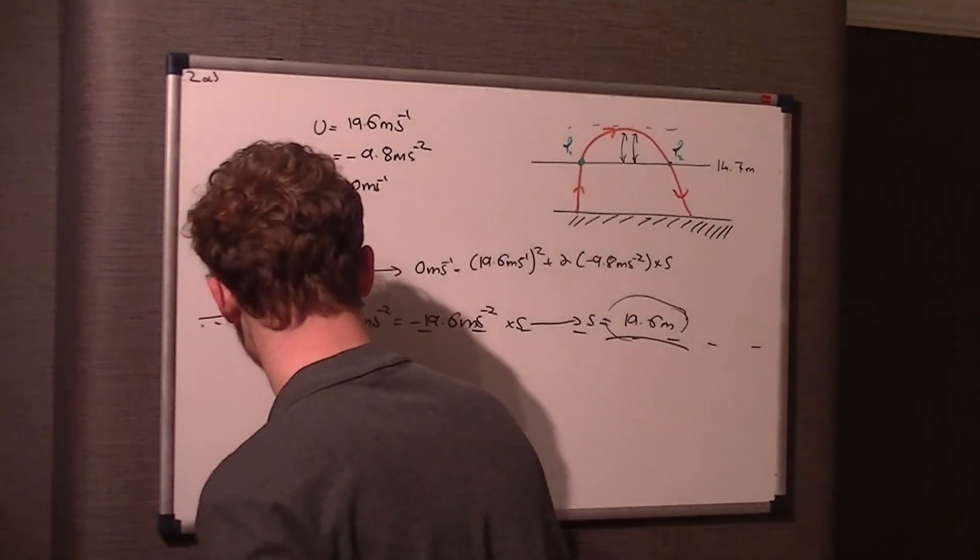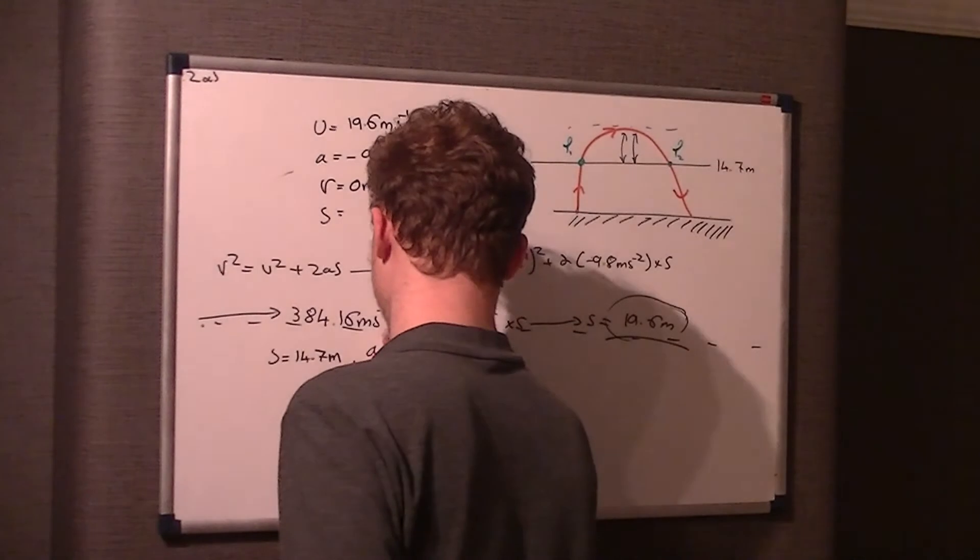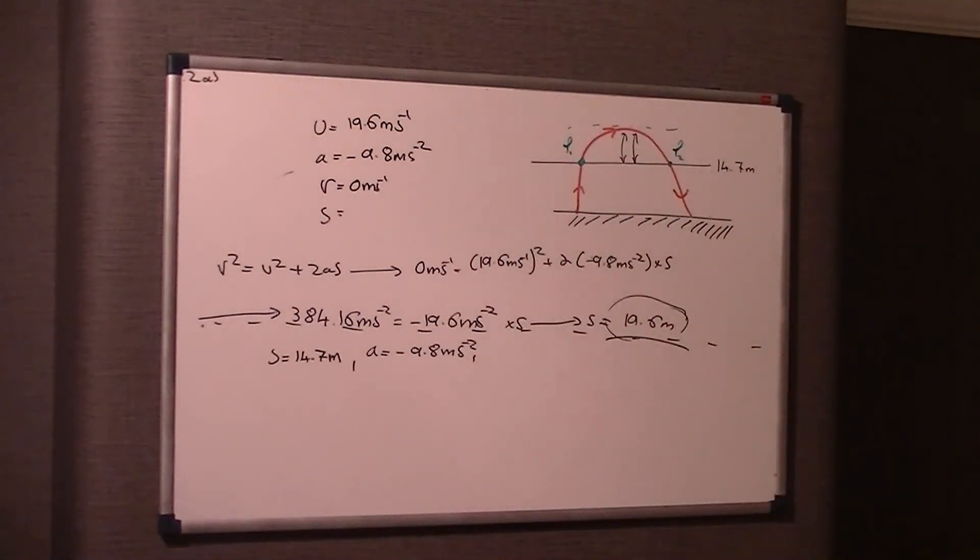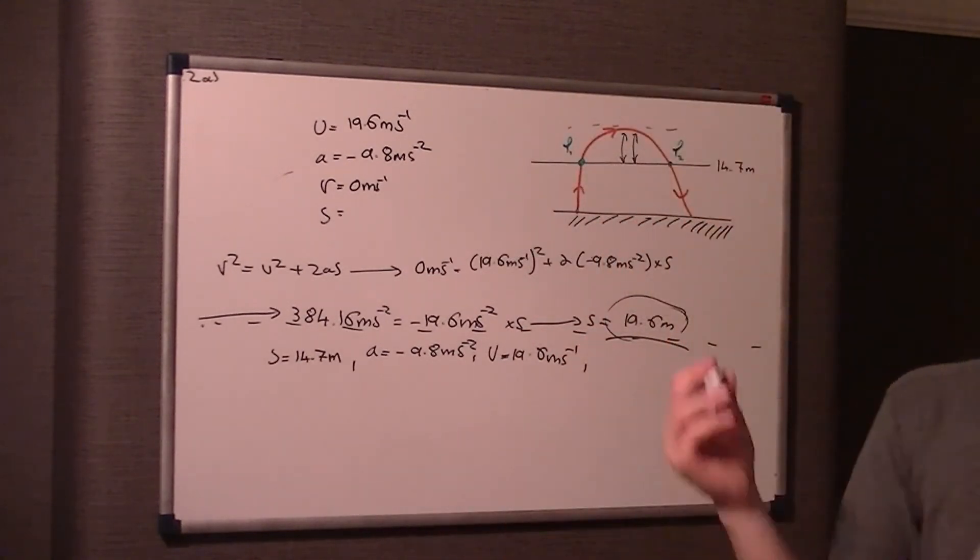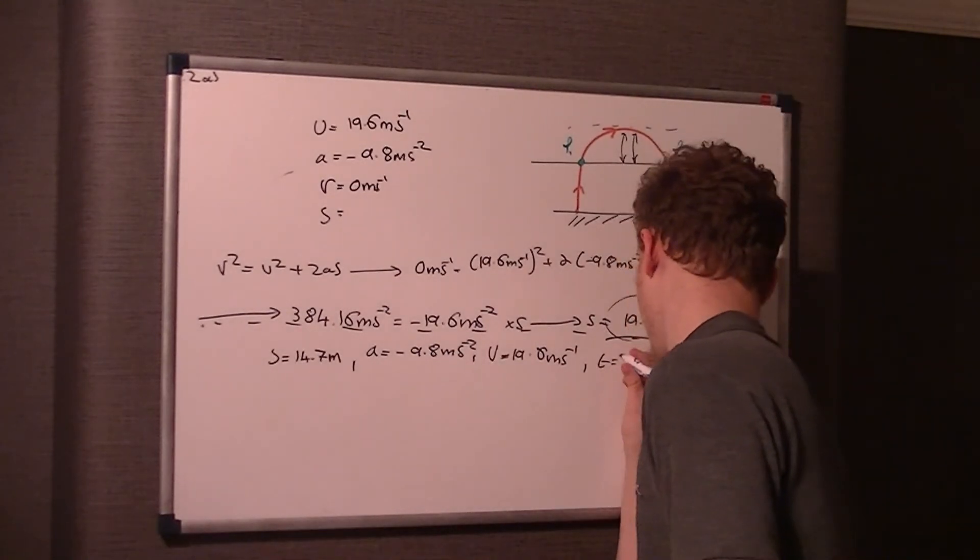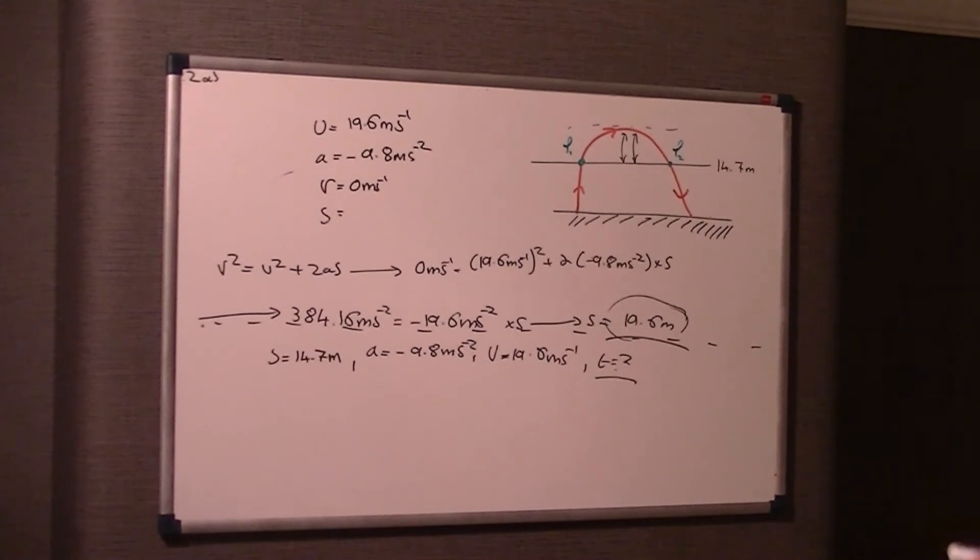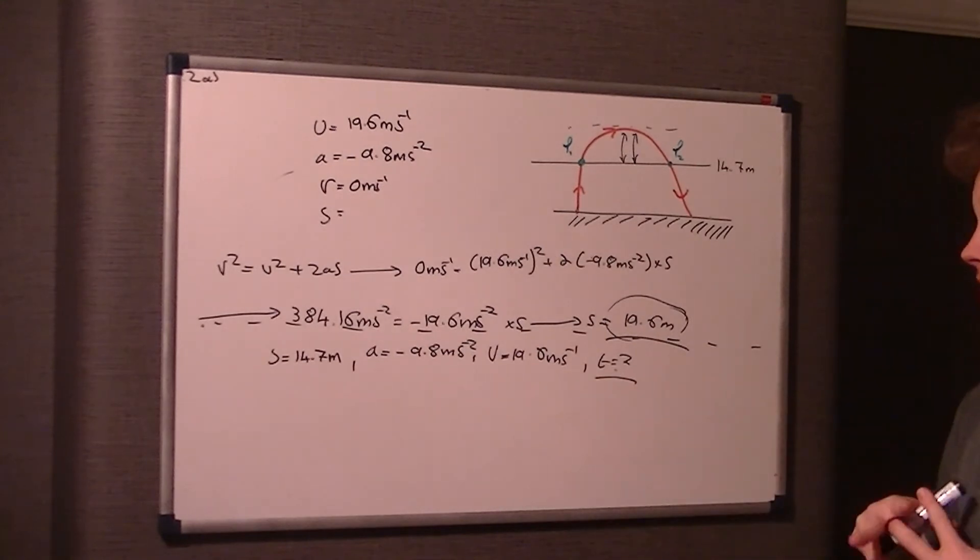We're going to be considering this whole journey for the first method. So what we've got is a distance of 14.7 meters, because that's the height we want to get to. Our a hasn't changed, it's negative 9.8 meters per second squared. Our u, well that hasn't changed either, that is 19.6 meters per second squared. We don't want to mess around with v because we're considering the whole thing and we don't know what the final v is, and we want to know what t is.